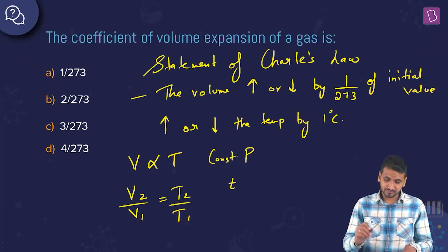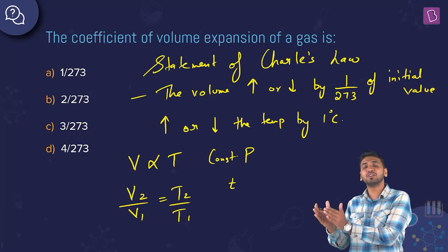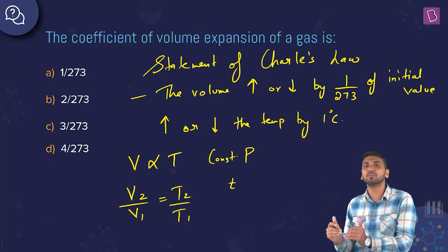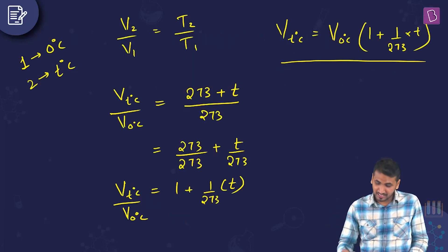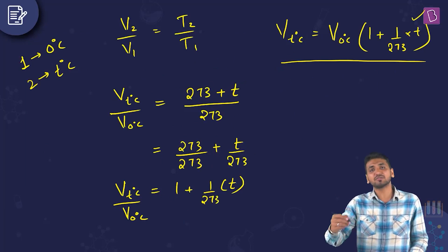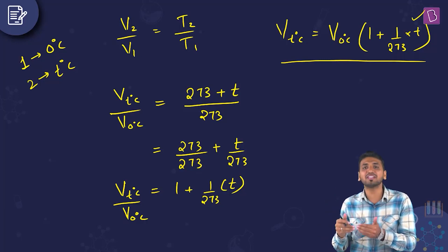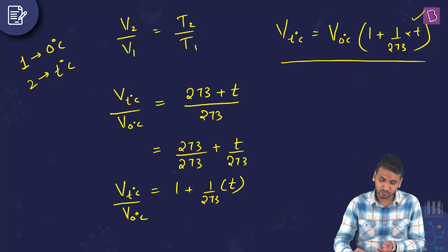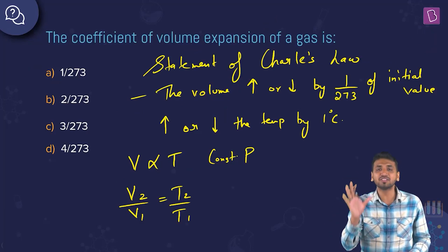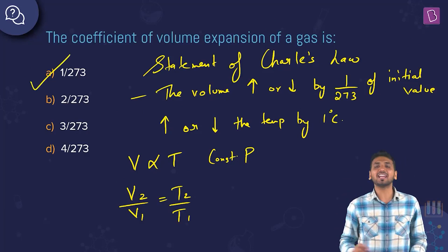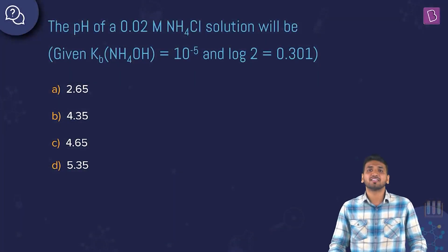Reading the statement and comparing to the formula: the volume increases or decreases by 1/273 of the initial value (volume at 0°C) for each 1°C change. If you put t = 1°C, V increases by (1/273)·V₀. This factor 1/273 is the coefficient of volume expansion of a gas. The correct answer is option A.